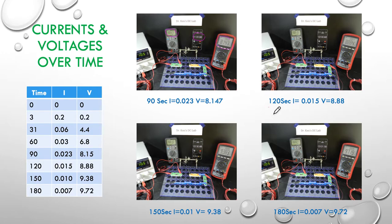Then we move across to 120 seconds and we've dropped even further at 0.15 of a milliamp and we're at 8.88 volts. Then at 150 seconds, almost done. 0.01 of a milliamp and 9.3 volts.